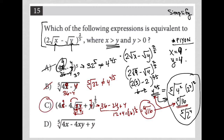We can try D as well, though it's not strictly necessary. With x=9 and y=4, we get 36 times 4 which is 144 — so minus 144 plus 4. This gives us a negative number, meaning we'd have the fifth root of a negative number, which is definitely not what we want. So choice D is out.